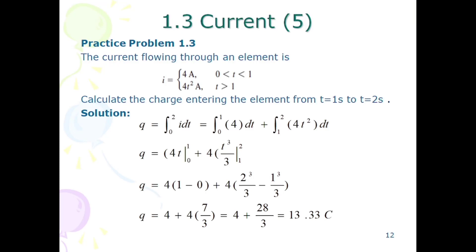Here is another practice problem. Current is given and we have to find out the charge from time 1 to 2 seconds. The current value from 0 to 1 is 4 ampere, and for greater than 1, its value is 4t².